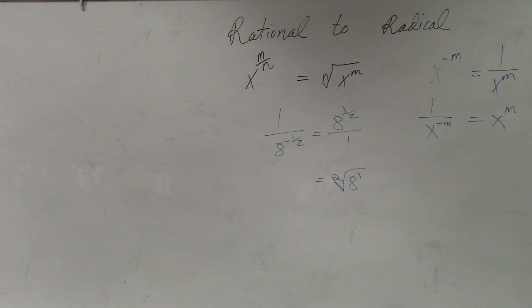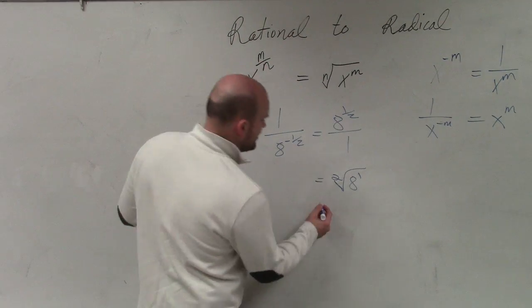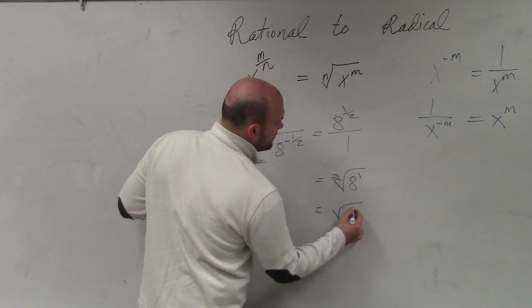However, we don't really write the 2 for the root. If we don't have a number there, we assume it's the square root. So any root higher than 2, you'd want to write in the number. But when it's just 2, we can just leave it as that. So we can rewrite this as the square root of 8.